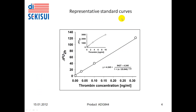Here are representative standard curves of the assay, where you see a rather large range of measurement at very low thrombin concentrations in the sub-nanogram per milliliter range, and of course higher signals in the nanogram range.